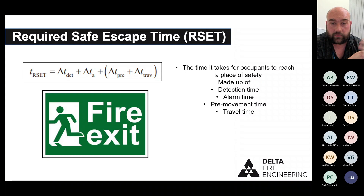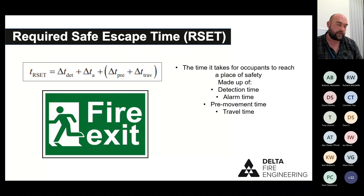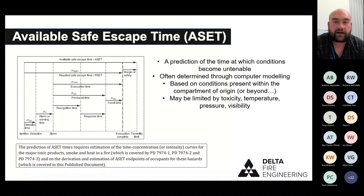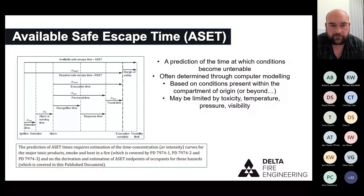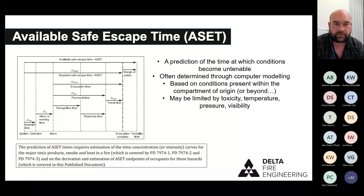The RSET is the required time — at its absolute fundamental definition, it's the time from fire starting to people reaching a place of safety. We start with detection time, then how long it takes occupants to be alerted, then pre-movement time, and finally travel time. We can calculate RSET by adding up all those components. The ASET, however, is slightly more difficult — it's the point at which untenable conditions occur in the building.